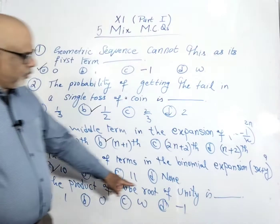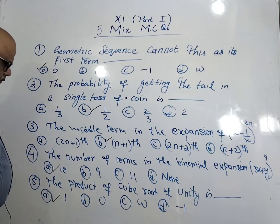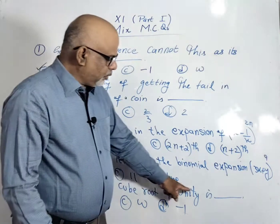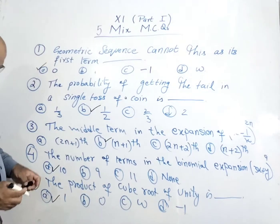The product of cube root of unity is 1. The product of cube root of unity is 1. So the correct option of fifth MCQ is A.